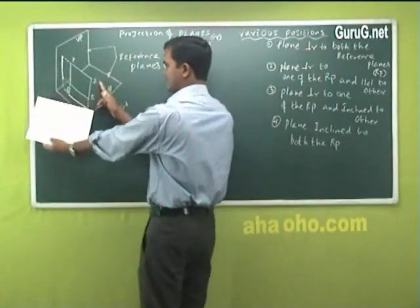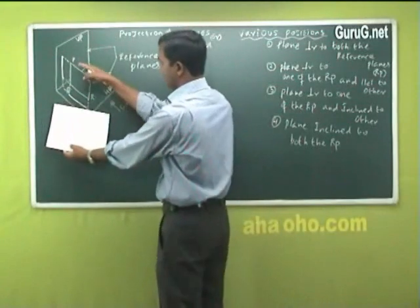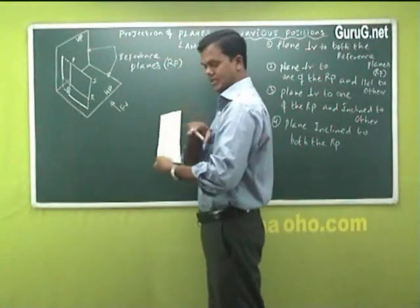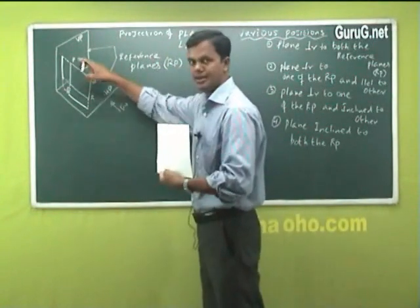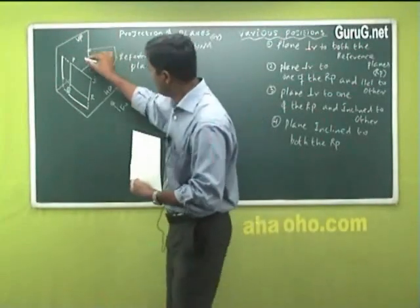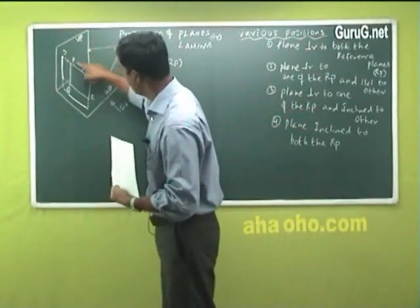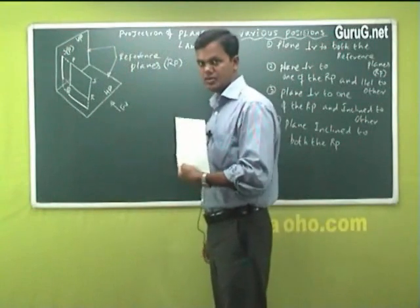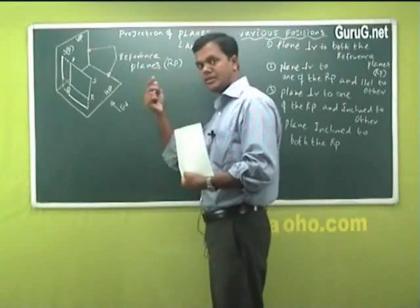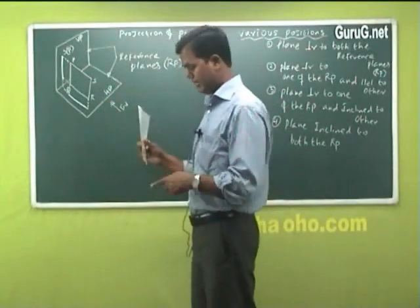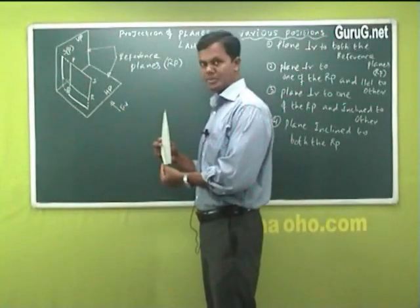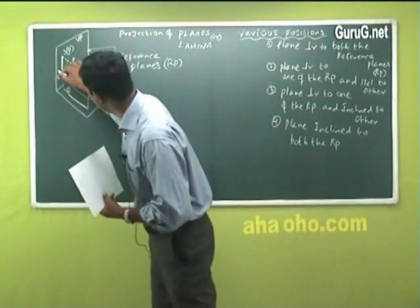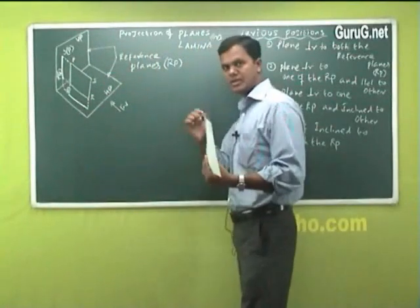The front view is what I am drawing on VP. My front side is S, R and P, Q. I can see S, but the opposite end P is not visible. I will write P in brackets. R is here and Q is here. You can see R from your front view, and Q cannot be seen, so I will write Q in bracket. This becomes my front view.